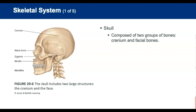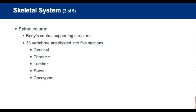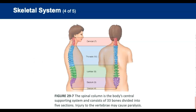The skeletal system begins with the skull, which is composed of two groups of bones: the cranial and the facial bones. The brain connects to the spinal cord through a large opening at the base of the skull called the foramen magnum. Four major bones make up the cranium: the occipital, temporal, parietal, and frontal. The face is composed of 14 bones, including the maxilla, zygomatic, mandible, nasal, and frontal bones. The spinal cord is the body's central supporting structure, with 33 vertebrae divided into five sections: cervical, thoracic, lumbar, sacral, and coccygeal.